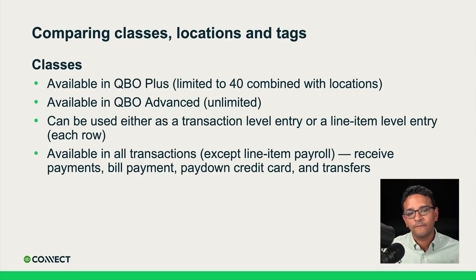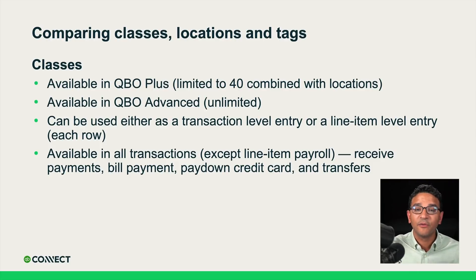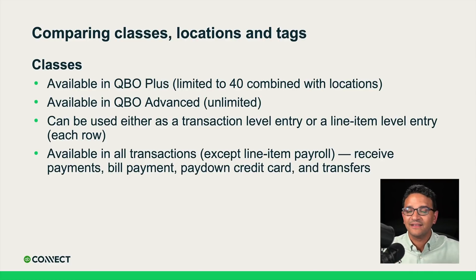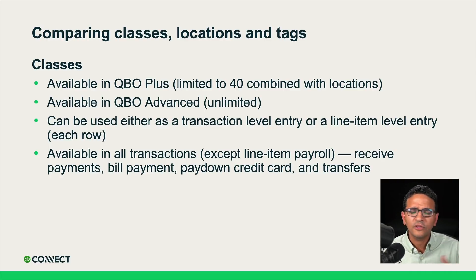Classes have a toggle to pick whether you want it to be a transaction-level tool or a line item-level tool. Line item means on each row — so if you have an invoice with seven items, you pick the class for each item. It's possible one transaction belongs entirely to one class, or you have multiple line items hitting multiple classes. Classes are available in almost all transactions except payroll at the line item level, and they're not available in receive payments, bill payments, paid on credit cards, and transfers.